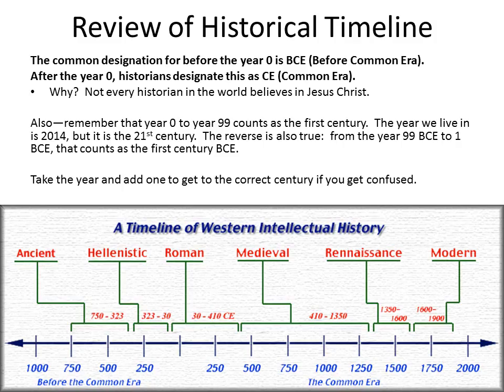Before we get started, we're going to be looking at the historical timeline. This is something that people often get confused about, so I want to make sure everybody's on the same page. The common designation for before the year zero is BCE, before the common era. In the United States, we often use BC, before Christ. After the year zero, historians designate this as CE, or common era.